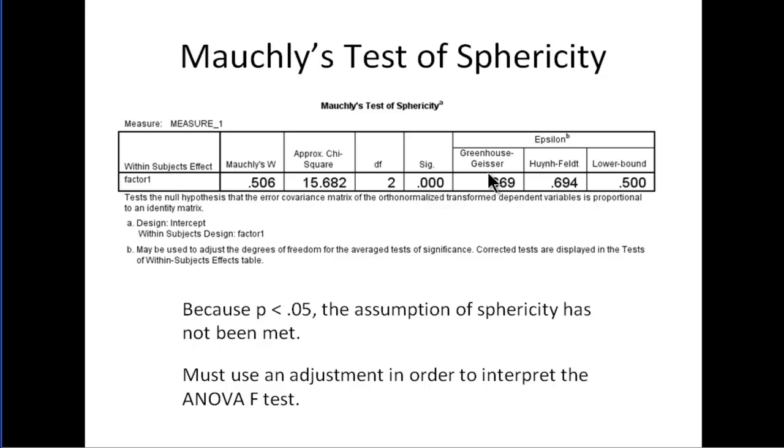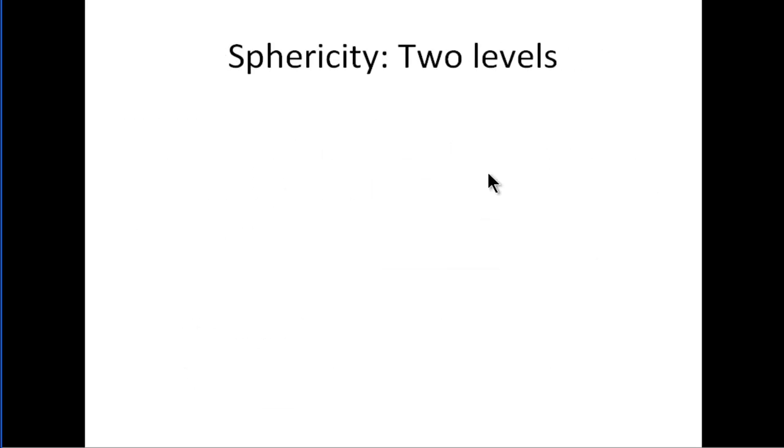One of those adjustments is Greenhouse-Geisser—that's probably the most popular one. When you only have two levels, I get this question often or people become perplexed. When you only have two levels, like a true dependent sample t-test, and there are only two levels, there's no possibility of violating sphericity.